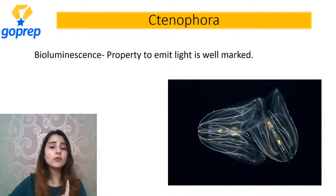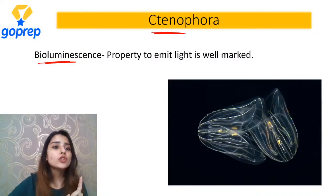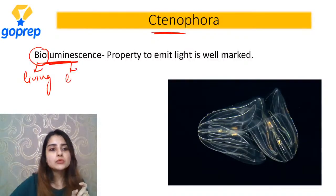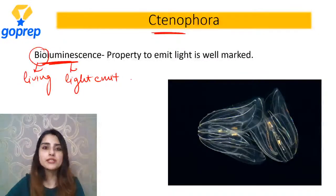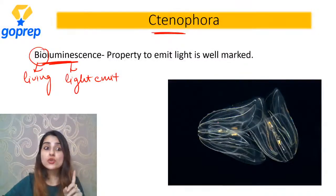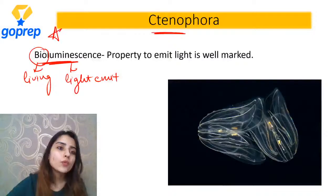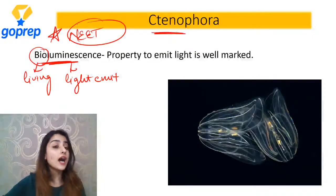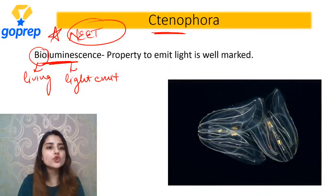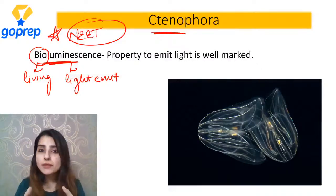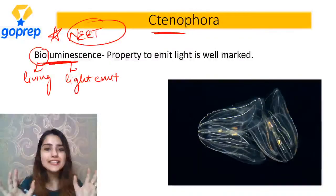One very important property of Ctenophores - bioluminescence. Bio ka kya matlab hota hai? Living. Luminescence ka kya matlab? Light emit karna. If any living body is emitting light, that property is called as bioluminescence. Ctenophores ke paas bioluminescence hota hai - this is a very important NEET question. NEET mein already aa chuka hai ki in mein se kaun sa phylum bioluminescence show karta hai.